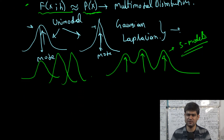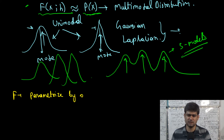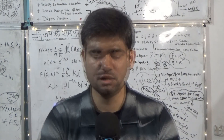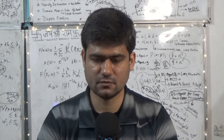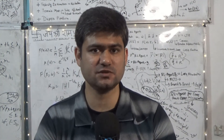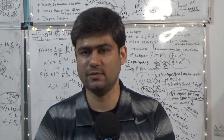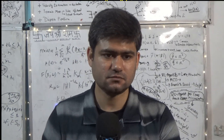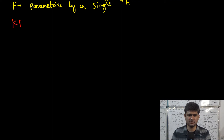This function f is parameterized by a single parameter h, which is known as the bandwidth parameter, as we will discuss later when we discuss the mean shift clustering algorithm. Before we start deriving the mean shift segmentation algorithm and working out the mathematics behind it, we will formally and mathematically define the kernel density estimator.